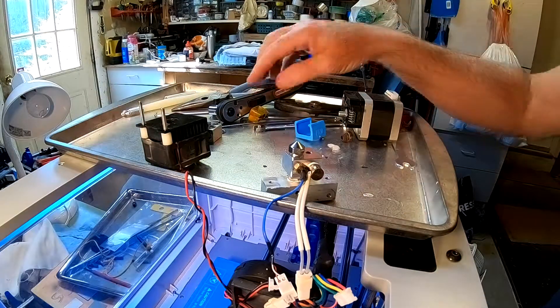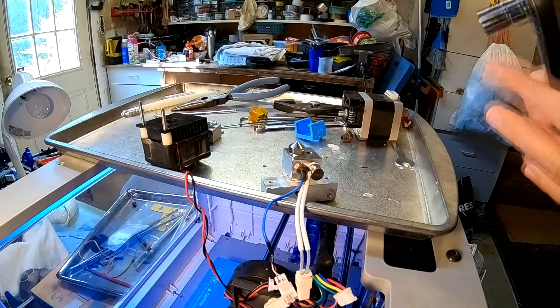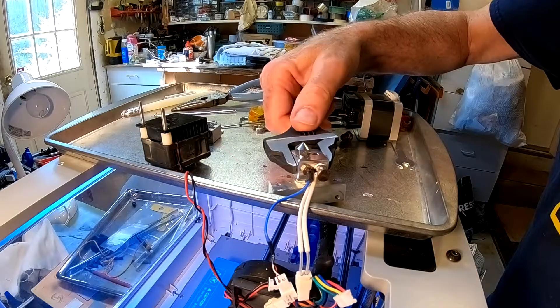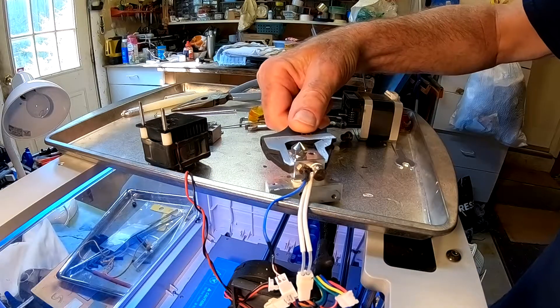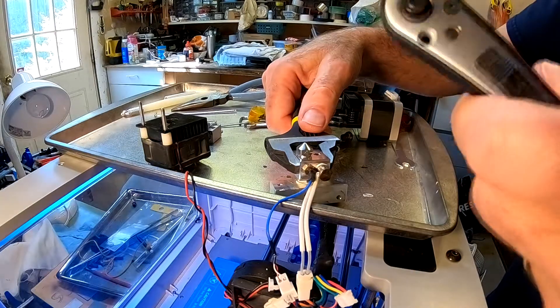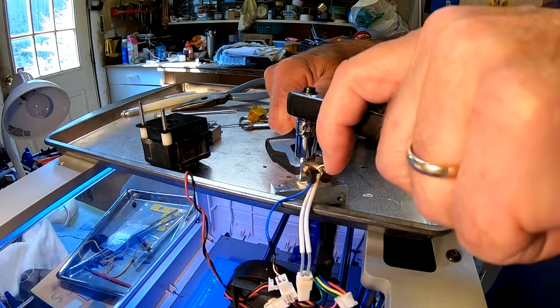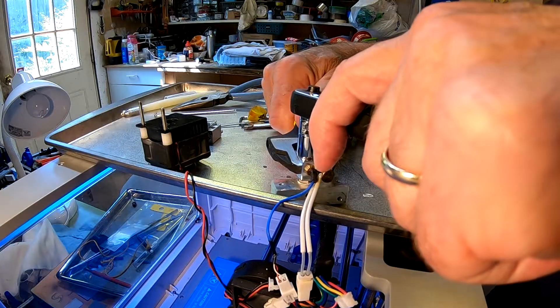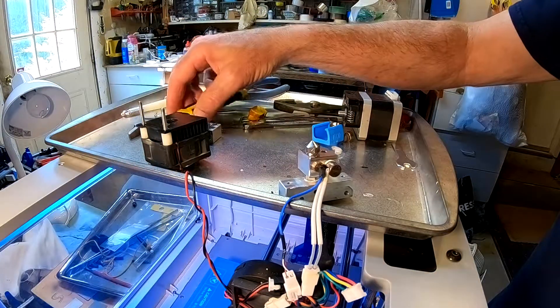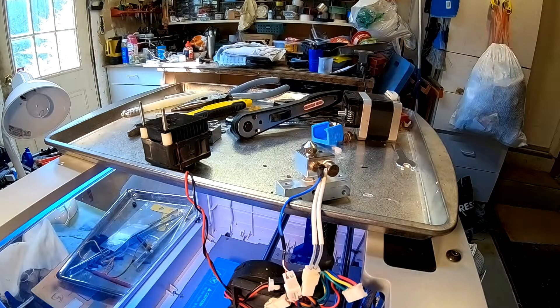Alright, so now we're going to tighten up our nozzle. So, we'll use our crescent wrench and we're going to use our socket. Tighten this up. There. You don't want to over tighten, obviously. You just want to make it so it's not going to go anywhere when it heats up. Alright, so now we're done with that.